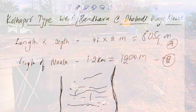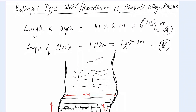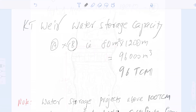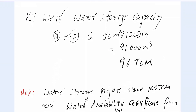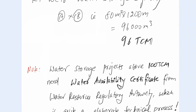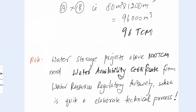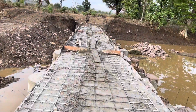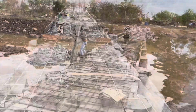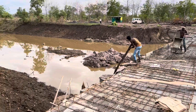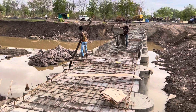The structure measures 41 meters by 2 meters, and the length of the Nala is 1.2 kilometers, giving a capacity of around 100 TCM. It is very important to note that any water storage reservoir with a capacity above 100 TCM requires a water availability certificate from the Water Resources Department — specifically the Water Resources Regulatory Authority.